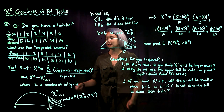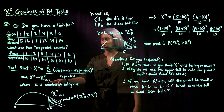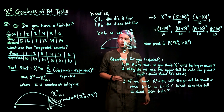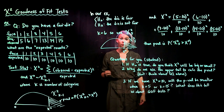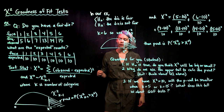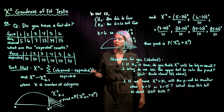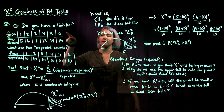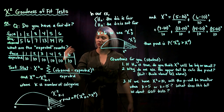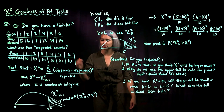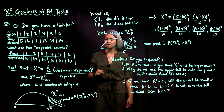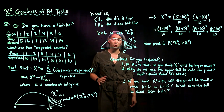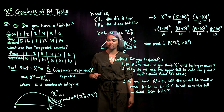This test statistic follows a chi-squared distribution with k minus one degrees of freedom, where k is the number of categories. Here we have six categories — faces one through six — so k equals six and we use a chi-squared distribution with five degrees of freedom.